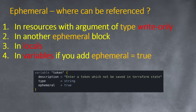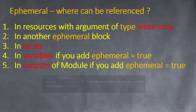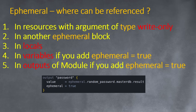Another example is in variables: if you add ephemeral = true, you can provide a password or token just one time at deployment — it will not be saved in the remote or local state. An ephemeral variable can only be used as an ephemeral reference. For outputs, you can create an ephemeral output with ephemeral = true only from a module, not from your main Terraform root. That's the end of the theory — let's do some hands-on.